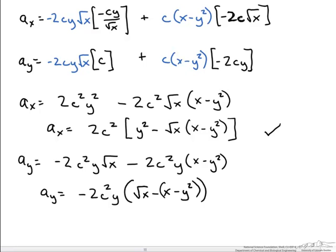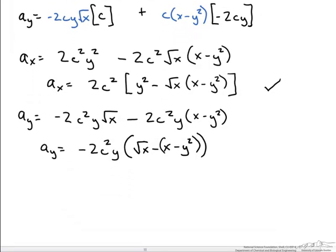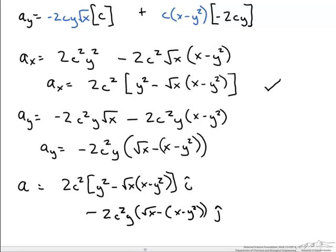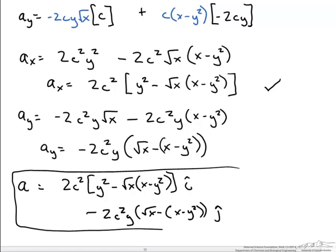To rewrite the full acceleration vector in terms of these two components, the acceleration equals the x component we derived above, and we add the y component — which, since it is negative, we subtract. This is our acceleration based on the velocity components given in the problem statement.